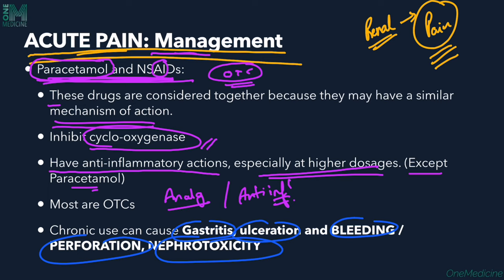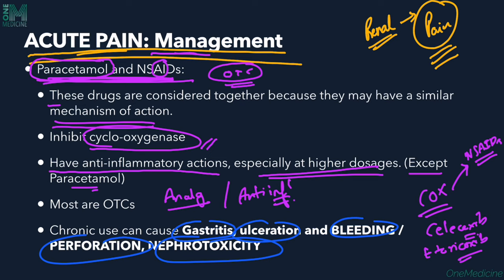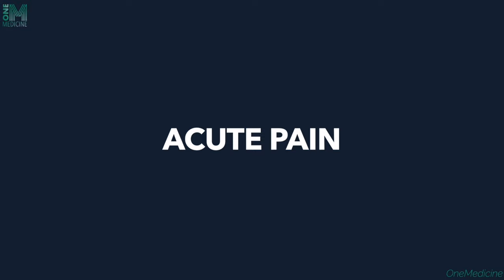There are two types of cyclooxygenase inhibitors: non-specific NSAIDs and selective COX-2 inhibitors such as celecoxib and etoricoxib. COX-2 inhibitors are not completely safe — they still cause nephrotoxicity — but gastritis, ulceration, and bleeding occur to a lesser extent compared to non-selective NSAIDs.